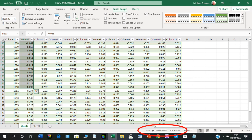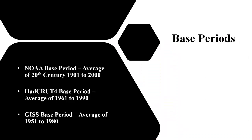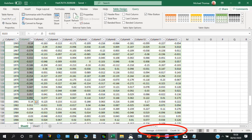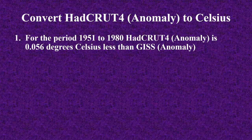The HadCRUT4 base period is 1961 to 1990. The average for that period should therefore be equal to zero to two decimal places, and it is. We now need to align HadCRUT4 with GISS. The HadCRUT4 average anomaly for the GISS base period 1951 to 1980 is not equal to zero — it is equal to minus 0.056 (rounding up the last digit). So for the period 1951 to 1980, HadCRUT4 anomaly is 0.056 degrees Celsius less than GISS anomaly.